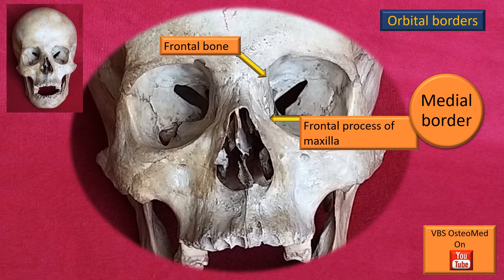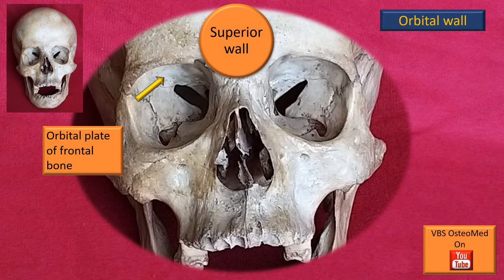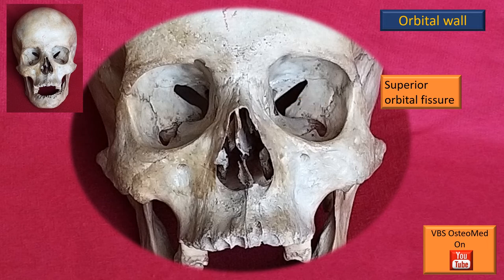Next, the medial border is mainly the frontal process of the maxilla from below upwards, and then in the upper part the frontal bone. These two join at the fronto-maxillary suture. Let's now examine the orbital walls to the extent visible in norma frontalis. The superior wall is the orbital plate of the frontal bone, which separates the orbit from the anterior cranial fossa. The superior orbital fissure is clearly visible, through which a number of structures communicate between the middle cranial fossa and the orbital cavity — this is a big list we will cover in detail in a later discussion on the orbit.